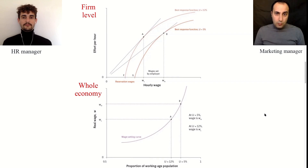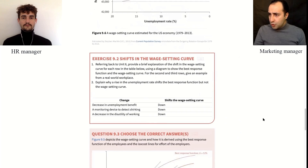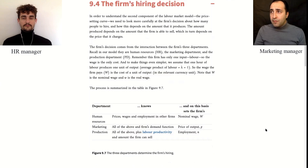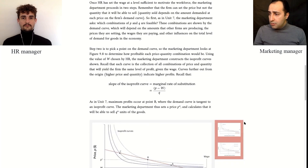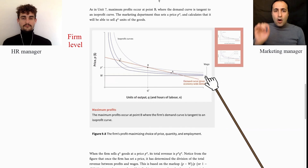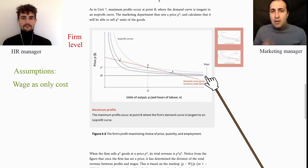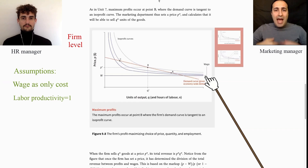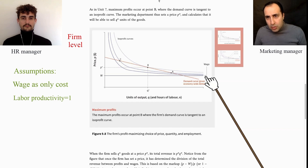Step two begins when Giacomo communicates the nominal wage to me in the marketing department. This wage is our only cost of production, because we assume our firm relies only on workers for production. We also assume each worker produces one unit of output per hour and that as we add more workers, their productivity remains the same. In other words, the marginal cost and average cost of our firm equals the nominal wage — just a simplifying assumption.